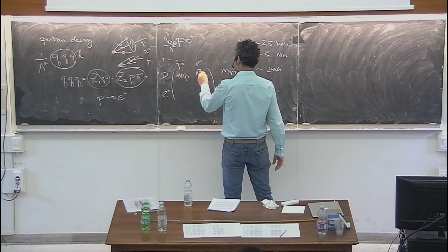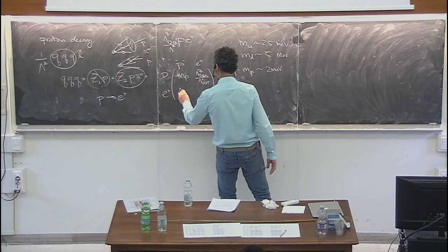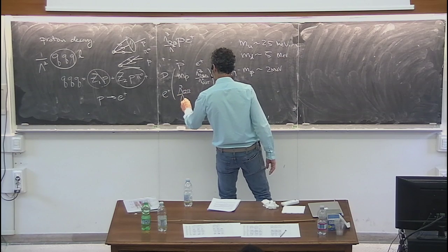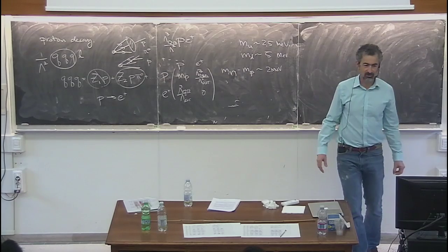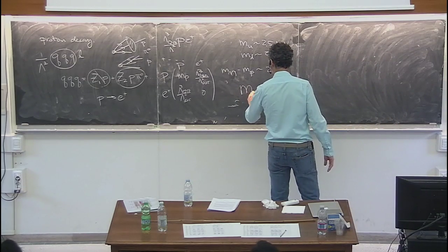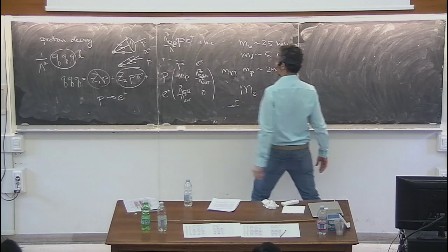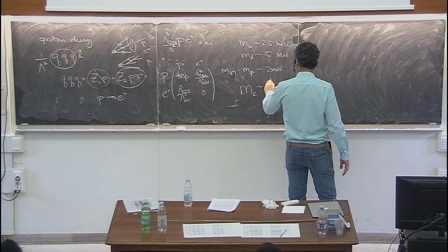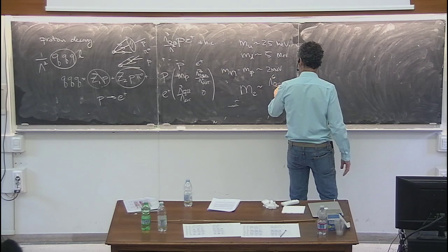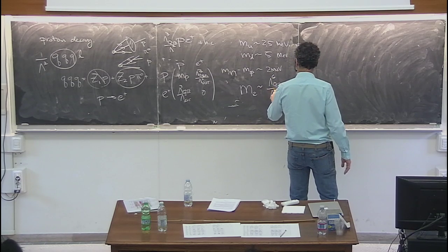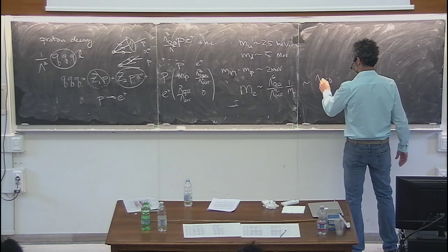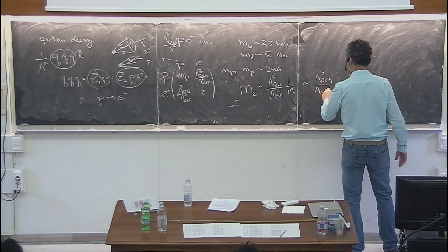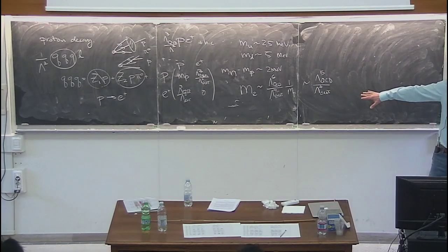The mass matrix would have basically m_proton from the QCD contributions, and then a lambda QCD cubed over lambda squared contribution due to the mixing. You'd find that not only is the proton massive, but this matrix has no zero eigenvalues - the electron mass would look like lambda QCD to the sixth over lambda GUT to the fourth times one over m_proton, which gives lambda QCD to the fifth over lambda GUT to the fourth. Absolutely not interesting as a number, but interesting as an idea that without the Higgs, everything gets massive.